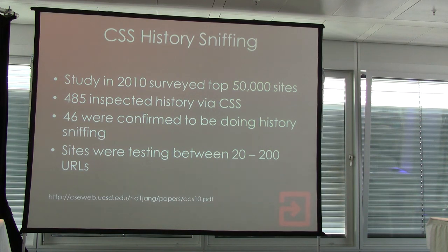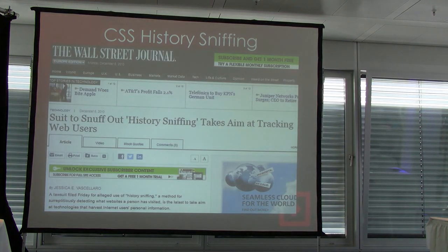What they found was that sites doing this were testing between about 20 and 200 URLs — not that many — but that's apparently all they wanted to know, just testing to see if you'd been to a competitive website, for example. There were lawsuits and all kinds of stuff because of this.